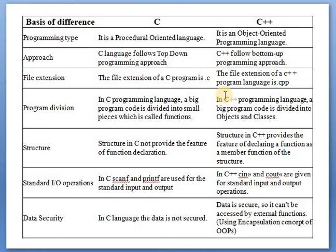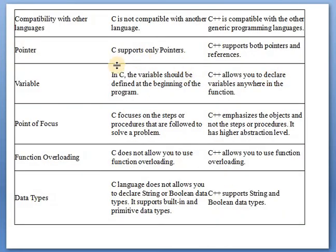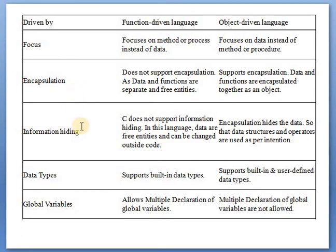You can remember the easy differences: approach — C top-down, C++ bottom-up; programming type — C is procedure-oriented, C++ is object-oriented; file extension — .c for C, .cpp for C++; point of focus — C focuses on procedure not data, C++ focuses on data (object) not procedure. The four features of encapsulation, information hiding, inheritance, and polymorphism are present in C++ language but not in C language.